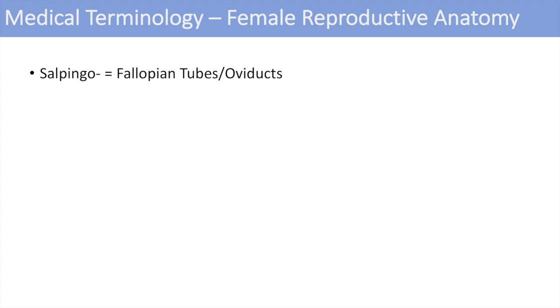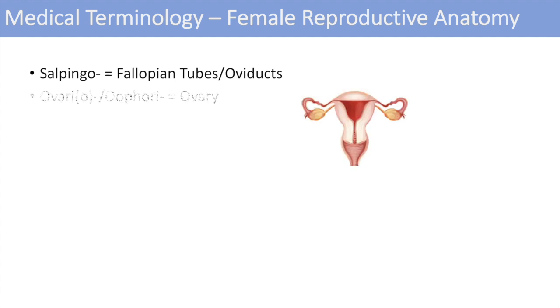Now that we've gone through musculoskeletal medical terminology, we'll move on to reproductive anatomy, beginning with female reproductive anatomy. The first prefix is salpingo, which denotes the fallopian tubes or the oviducts — you can think of a salpingogram or a BSO, a bilateral salpingo-oophorectomy. The next one is ovary or oophory, which denotes the ovaries. You can think of an oophorectomy, the surgical removal of the ovaries.